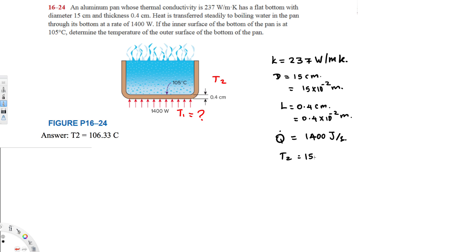We also have the final temperature T2 = 105°C, and the question asks us to find T1. The formula we will use is Q̇ = −KA·ΔT/L. We have thermal conductivity K provided. We don't have the area directly, but the cross-sectional area of the bottom is a circle, and the diameter is provided, so we can find A. L is the thickness, which is 0.4 × 10⁻² meters.